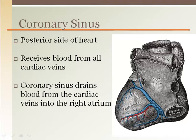There are many cardiac veins that contain used or deoxygenated blood. This blood must be returned to the heart so it can be sent to the lungs for oxygenation. All the cardiac veins drain into a large vessel area called the coronary sinus, which then has a direct drainage hole into the right atrium, returning the cardiac blood into the regular circulation to be sent to the lungs.